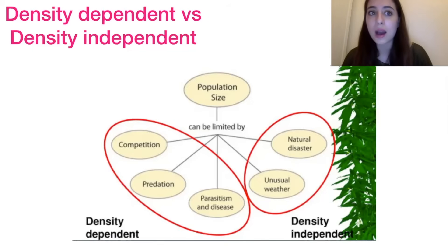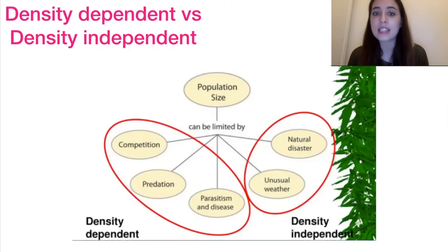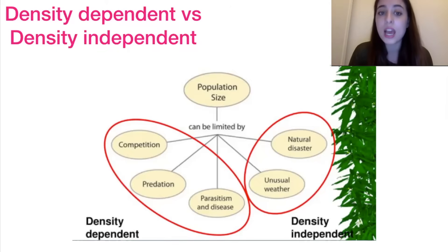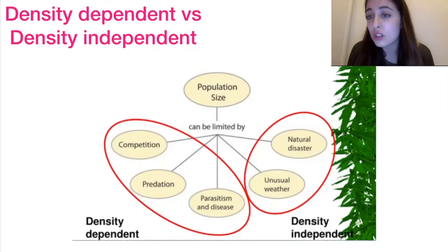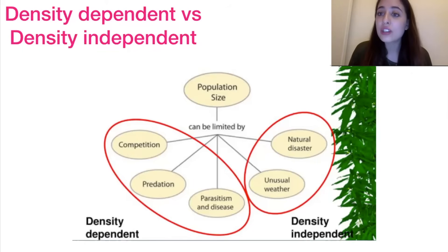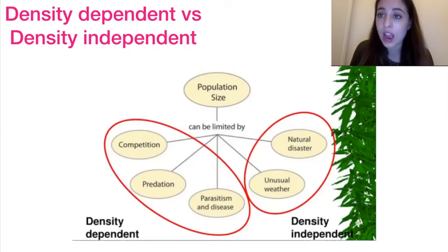There's an important distinction between density dependent and density independent limiting factors. Density dependent factors affect larger populations more than smaller ones — examples include competition, predation, and disease, which become more prevalent as organism numbers increase. Density independent factors, such as extreme weather and natural disasters, affect small and large populations equally, since a larger population doesn't increase the likelihood of such events occurring.